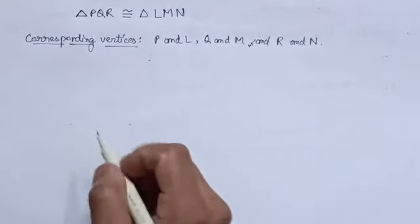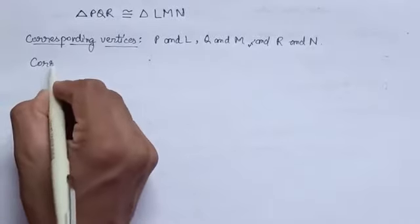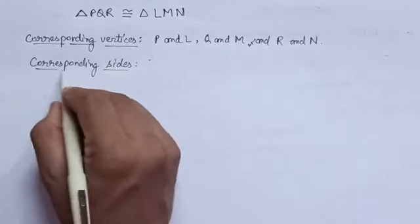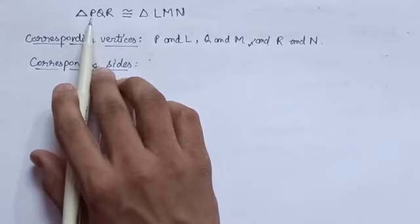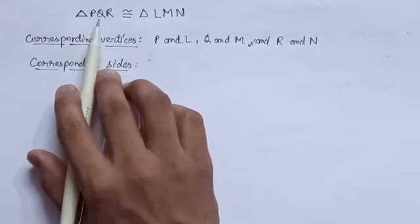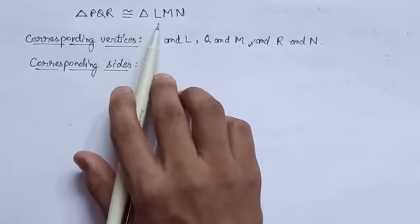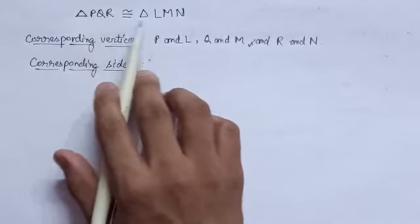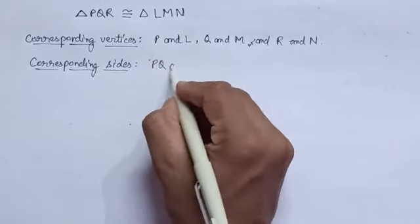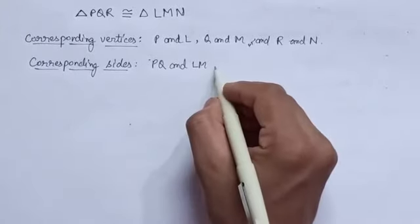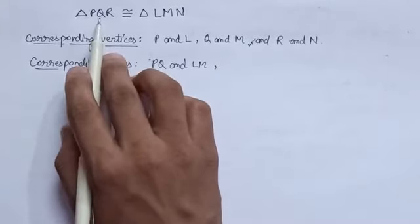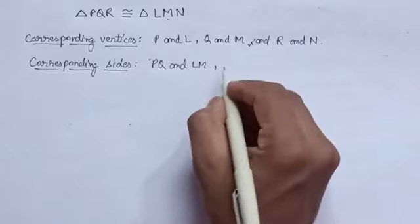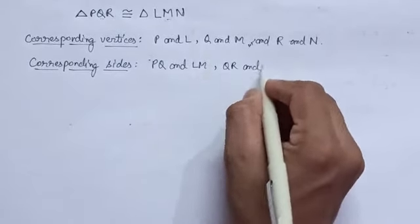Now let us see the pairs of corresponding sides. If we take the first two letters PQ of triangle PQR, then the first two letters of triangle LMN is LM. Hence, side PQ corresponds to side LM — PQ and LM is one pair of corresponding sides. In the same way, the last two letters QR correspond to the last two letters MN. Hence the next pair is QR and MN. The third pair: if we take the first and third letters of triangle PQR, that is PR, then it corresponds to the first and third letters of triangle LMN, that is LN. Hence, the third pair of corresponding sides is PR and LN.